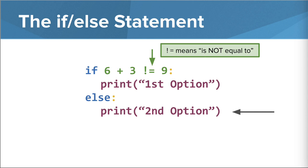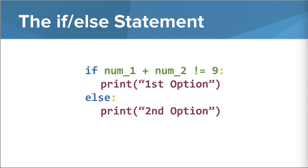We can also do this with variables too, which might look something like this. Now it says, if num1 plus num2 is not equal to 9, print first option. Otherwise, print second option. The actual option printed in this case depends on the values stored in num1 and num2.